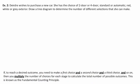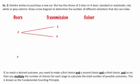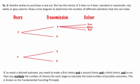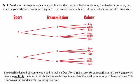Let's do another example with a tree diagram. Deidre wishes to purchase a new car. She has the choice of a two-door or four-door, she can select standard or automatic transmission, and she can have a white, red, or gray exterior. We draw a tree diagram with choices for doors, transmission, and color. For doors: two-door or four-door. For each, transmission is standard or automatic. Then for each of those, three color choices: gray, white, or red. Counting the final arms of the tree, we have 12 car choices.